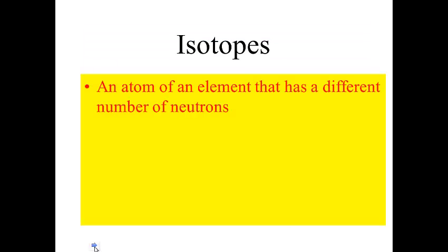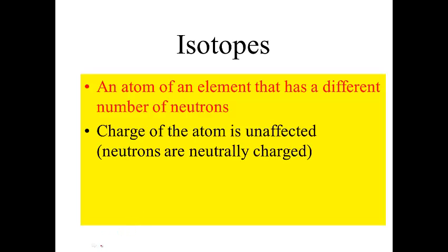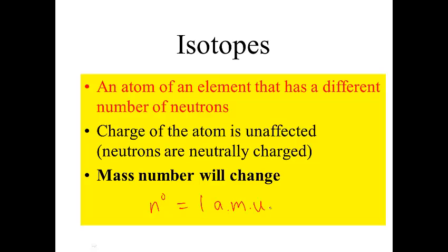So, again, to touch on isotopes. The definition is that it's an atom of an element that has a different number of neutrons. The charge is not affected because neutrons are not charged. The mass, however, will change because each neutron has a mass of one atomic mass unit. So, any time you add or remove neutrons, you change the mass.